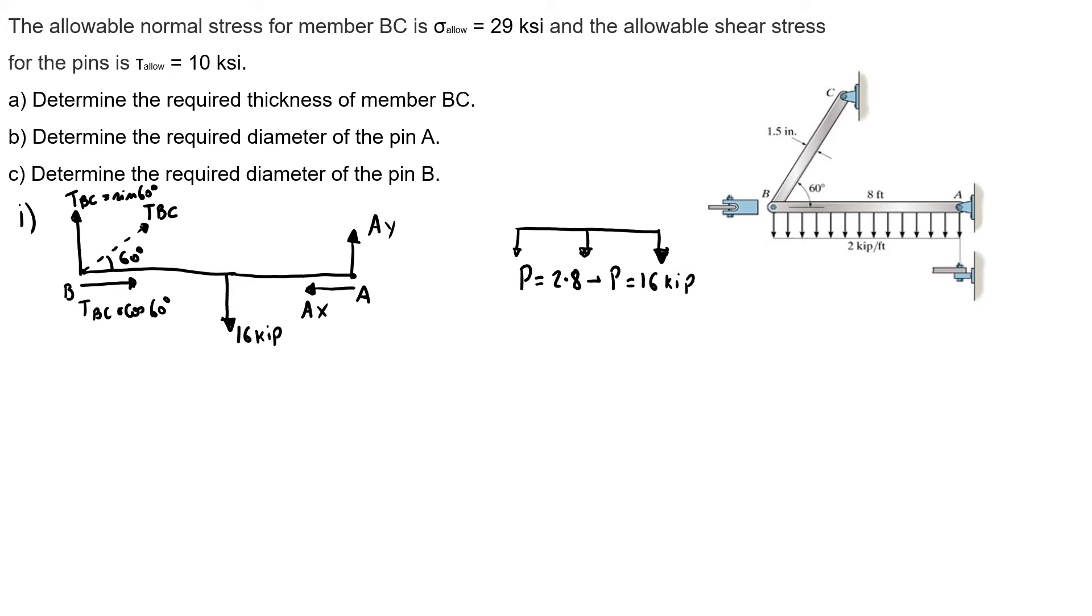So now I'm gonna find my forces BC and then A. I will start doing the sum of momentum around A, counterclockwise is positive equals 0. So my 16 kip is doing a momentum counterclockwise. So I have 16, that's my force, times 4, that's my distance. And then my BC in y direction is doing a clockwise.